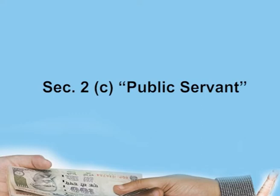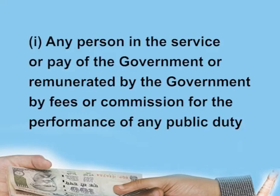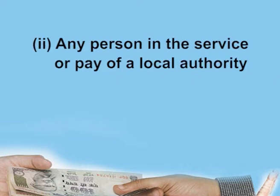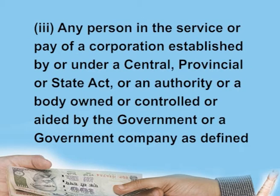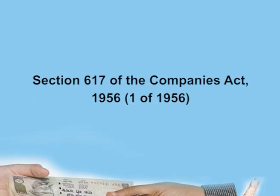Section 2(c) defines Public Servant. It means: number 1, any person in the service or pay of the government or remunerated by the government by fees or commission for the performance of any public duty. Number 2, any person in the service or pay of a local authority. Number 3, any person in the service or pay of a corporation established by or under a central, provincial or state act, or an authority or body owned, controlled or aided by the government or a government company as defined in Section 617 of the Companies Act 1956.